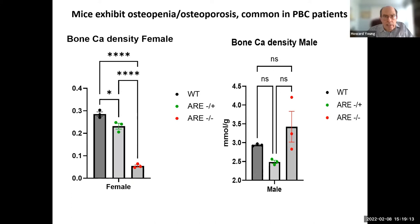This could also be a model for osteopenia. Eric Gershwin noted this is very common in women with PBC, and calcium bone density goes way down in homozygote females and also in heterozygotes, but not really in males — so this is again a female-based disease. This is very frequently seen in patients and is another example of why our mouse is a good model. We're actually working with companies that have drugs they think can stop the disease.